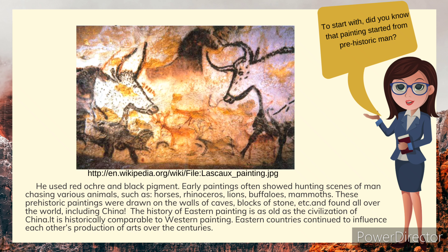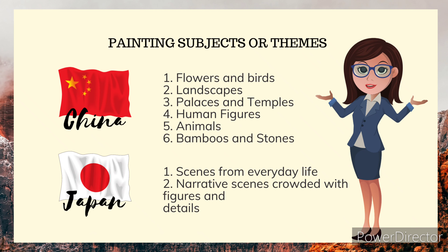The history of Eastern painting is as old as the civilization of China, and is historically comparable to Western painting. Eastern countries continued to influence each other's production of arts over the centuries. In China, the painting subjects or themes are flowers and birds, landscapes, palaces and temples, human figures, animals, bamboos, and stones.